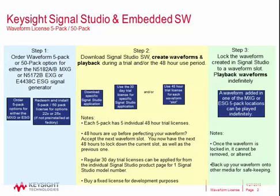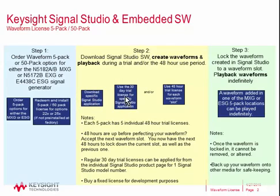Once you've got the option installed, you download and run your Signal Studio software, create your waveforms, and play them back. If you're using a Signal Studio 30-day trial for a particular model number, that works fine for trialing waveforms. You use the 48-hour use period in your waveform slots with either the 30-day trial or the 48-hour trial license. Each 5 pack has five individual 48-hour trial licenses. If your 48 hours are up before perfecting your waveform, move to the next waveform slot — you then have the next 48 hours to lock down the current slot as well as the previous one.